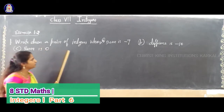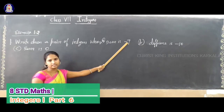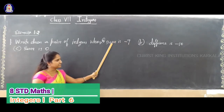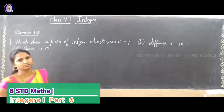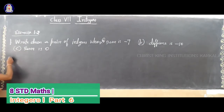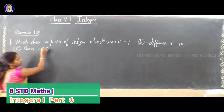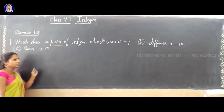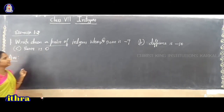You can write any two integers, but the answer you must get is minus 7. Sum means addition. So the sum of any two integers must equal minus 7. Now you have to think which integers we can write. The question mentions a pair of integers whose sum is minus 7.